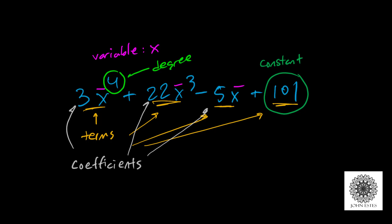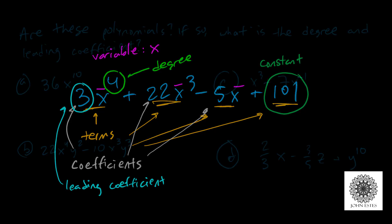So the degree is referencing the highest exponent in your polynomial. And the coefficient of the term that has the highest degree, in this case 3, is what I call my leading coefficient. So these terms are all very important.